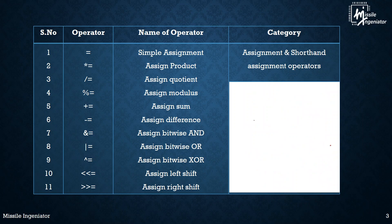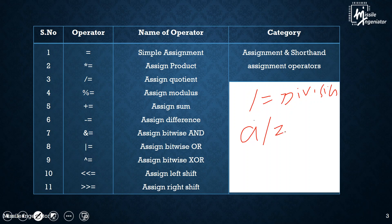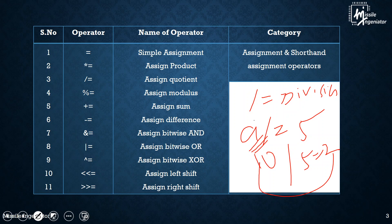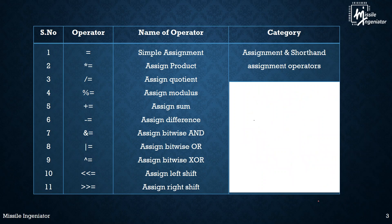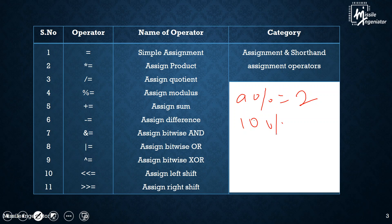Next is the divide-assign (/=). This is the division operator. If A is 10 and I say A /= 5, then 10 divided by 5 is 2, so A changes from 10 to 2. In the divisible operator we store the quotient value. In case of the modulus-assign (%=), we store the remainder. If I say A %= 2 and A is 10, then 10 modulus 2 equals 0, so the remainder is 0 and A is now modified to 0.